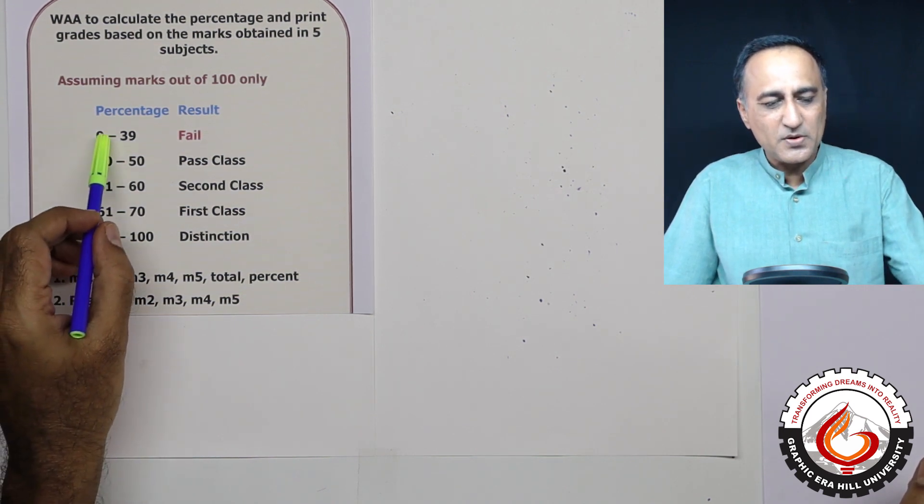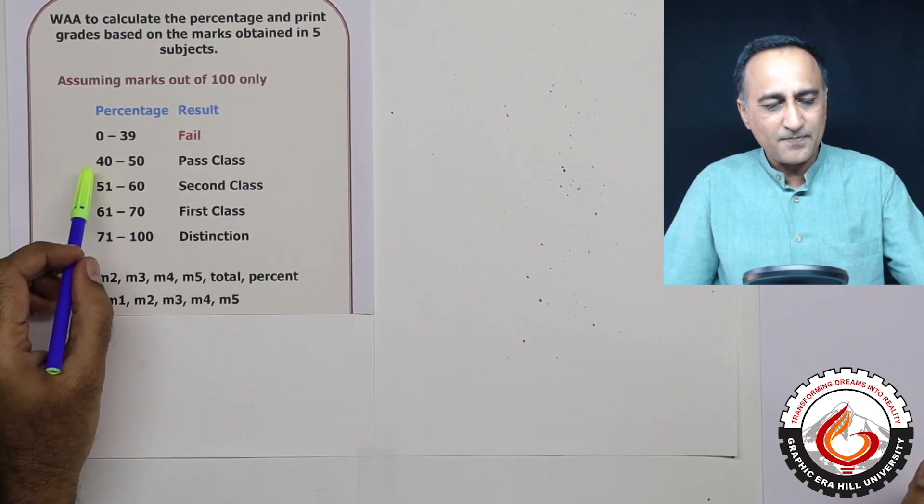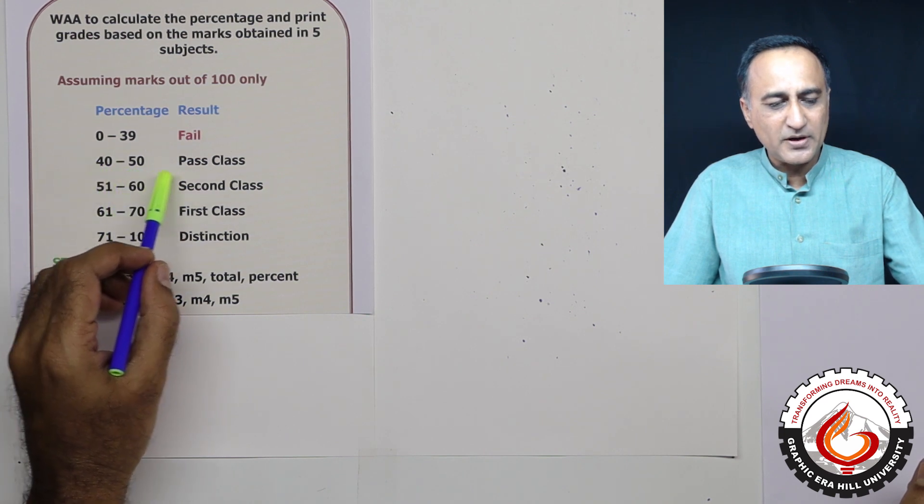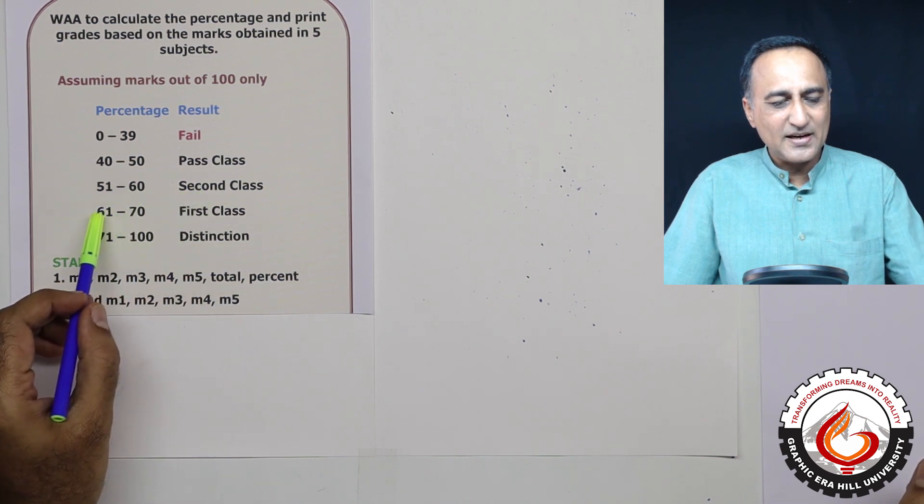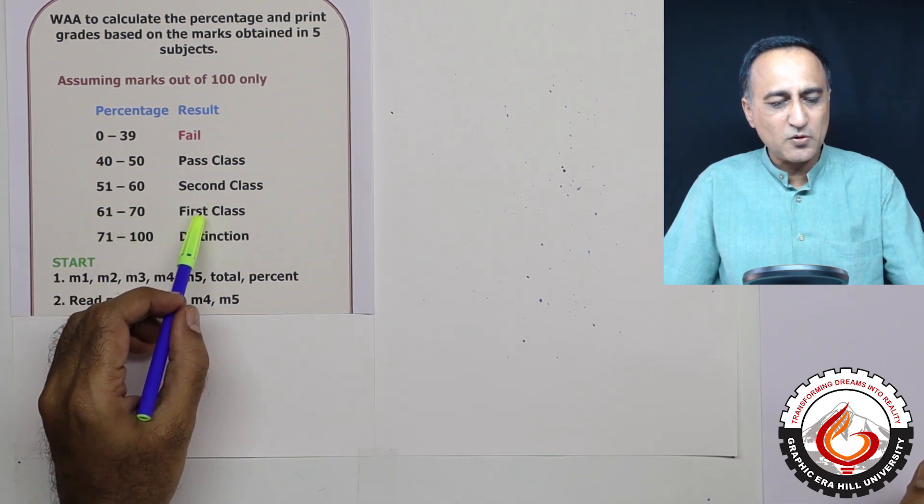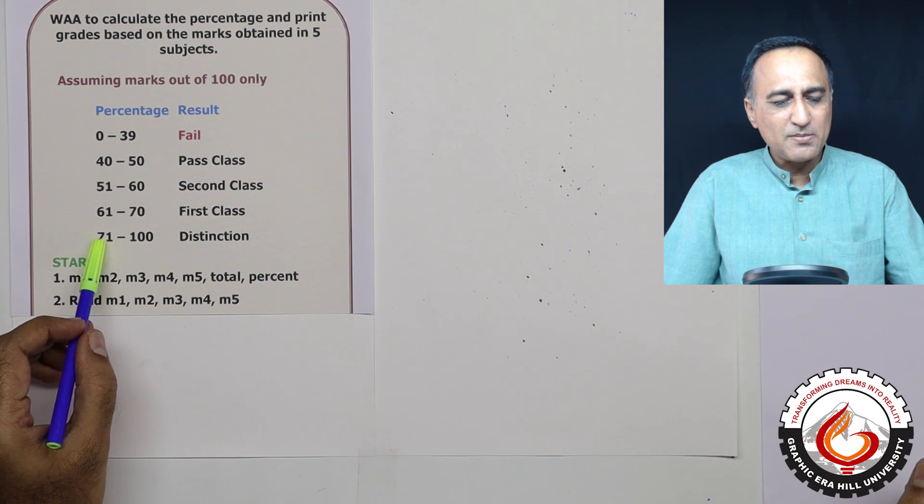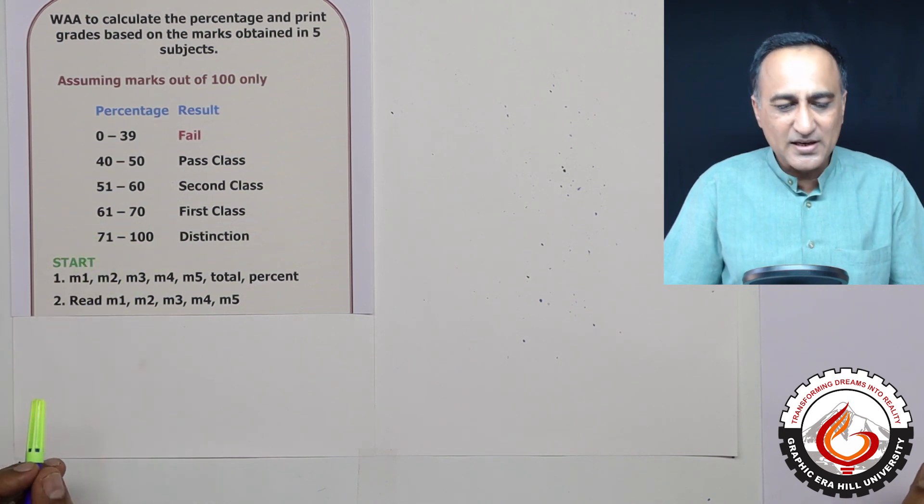So if the percent is between 0 to 39, I'm going to say fail. If the percent is between 40 to 50, I'm going to say pass class. If it is between 51 to 60, I'm going to say second class. If it is between 61 to 70, I'm going to say first class, and anything above 71 to 100, I'm going to say distinction.